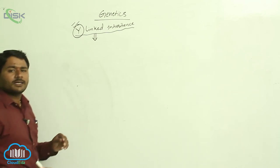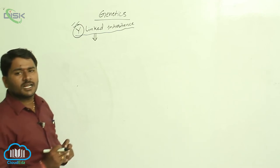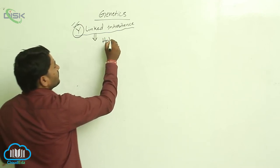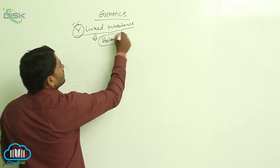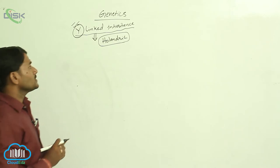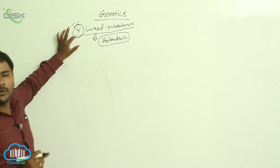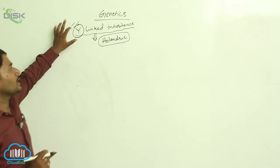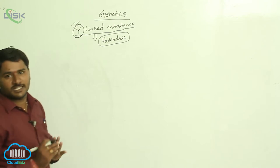Y-linked genes are also known as holandric genes. The genes which are present on the Y-chromosome whose alleles are absent on the X-chromosome are called Y-linked genes or holandric genes.